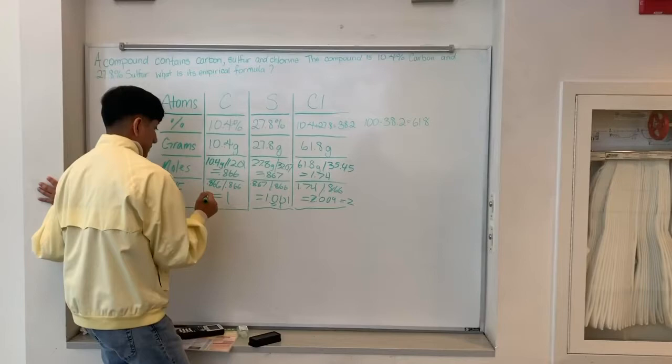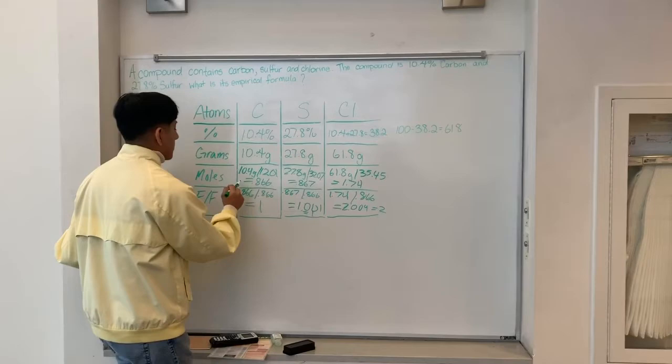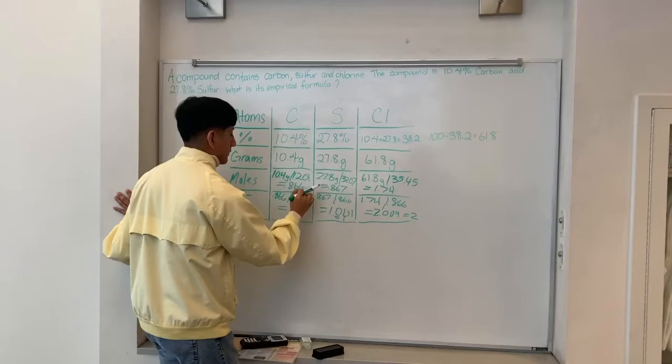For the final calculations, we take the amount of moles we got for each element and divide by the lowest amount of moles, which in this case is 0.866.